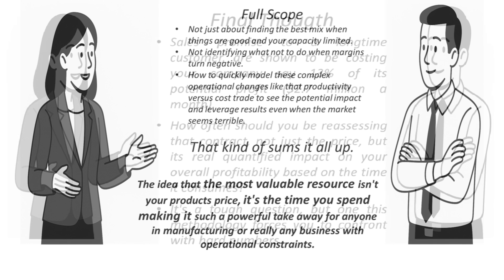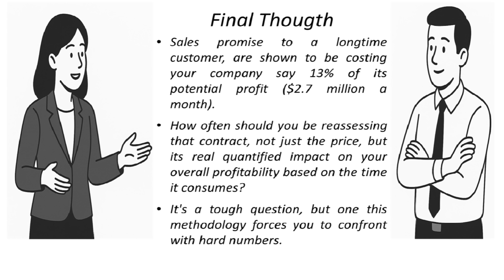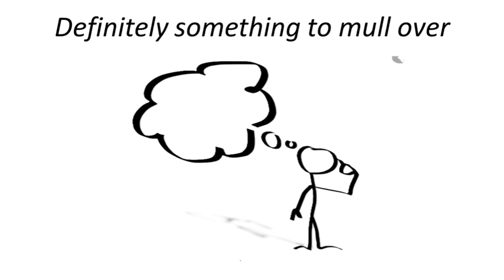So here's a final thought: if those strategic constraints — like a minimum sales promise to a longtime customer — are shown by this kind of analysis to be costing your company 13% of its potential profit, that $2.7 million a month we talked about, how often should you be reassessing that contract? Not just the price, but its real quantified impact on your overall profitability based on the time it consumes. Should that be an annual review, quarterly, or maybe every time the market shifts significantly? This methodology forces you to confront that question with hard numbers.